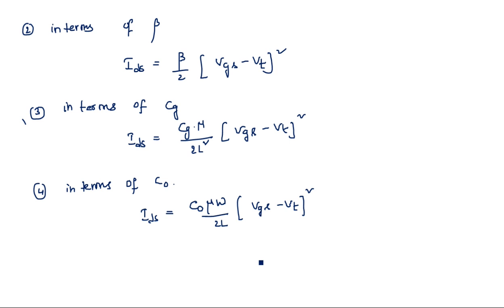The previous four equations were for the non-saturation region; these four are for the saturation region. Depending on the operation of the transistor — whether it is in the saturation region or non-saturation region — the corresponding formula must be used, because we will be using these IDS formulas many times going forward. This completes the derivation of IDS versus VDS. Thank you.